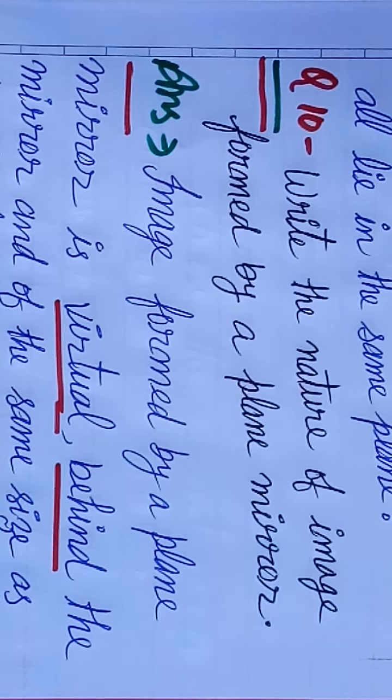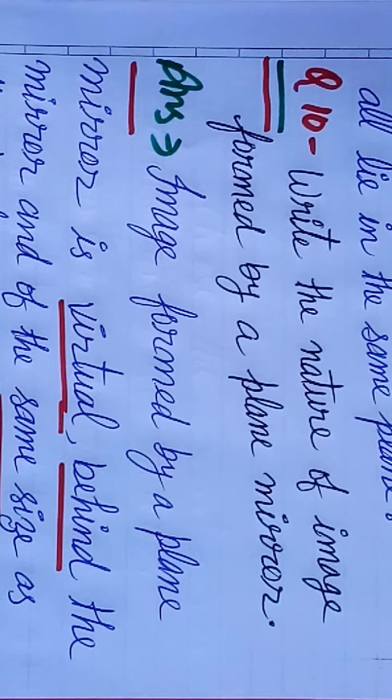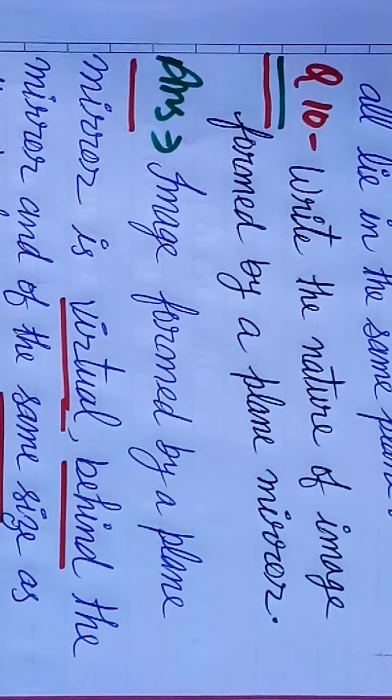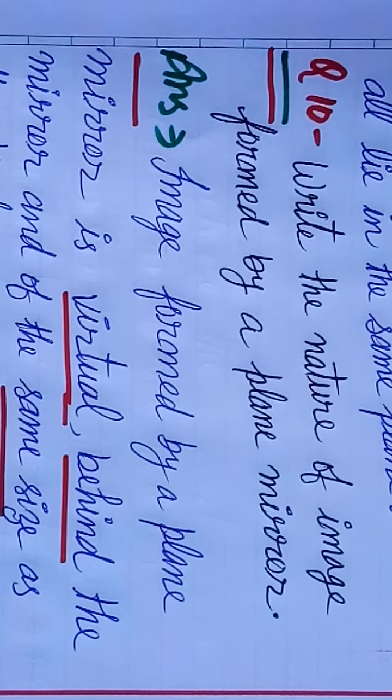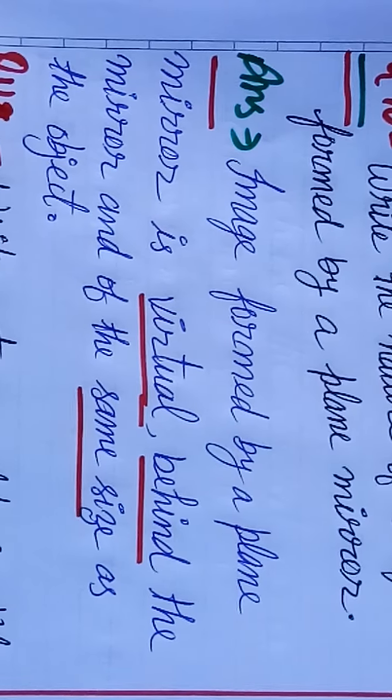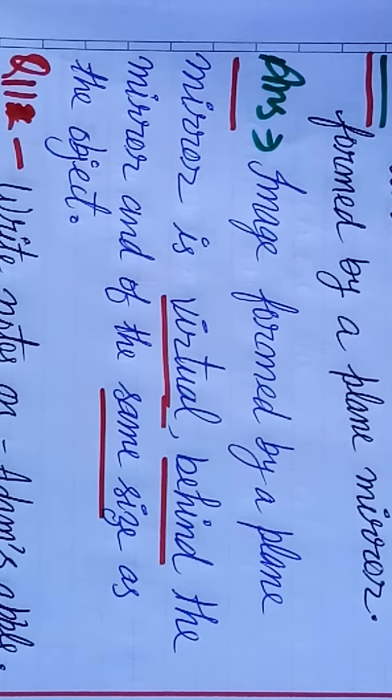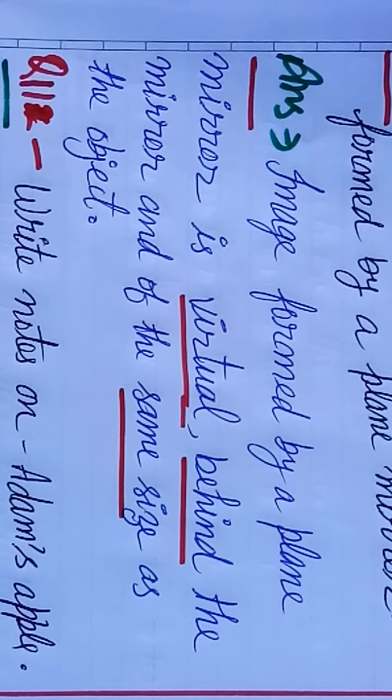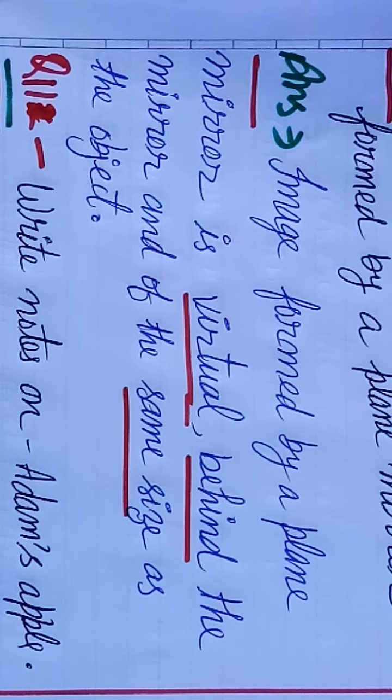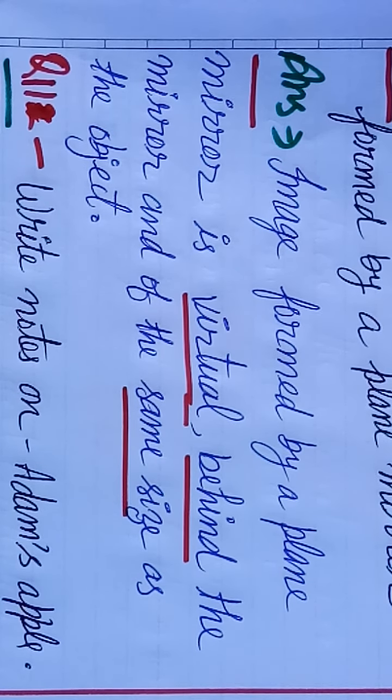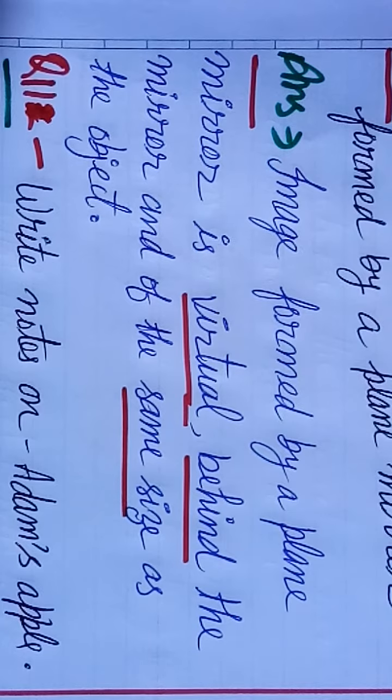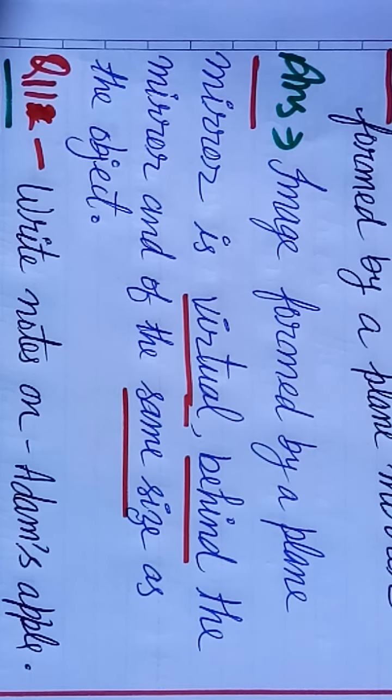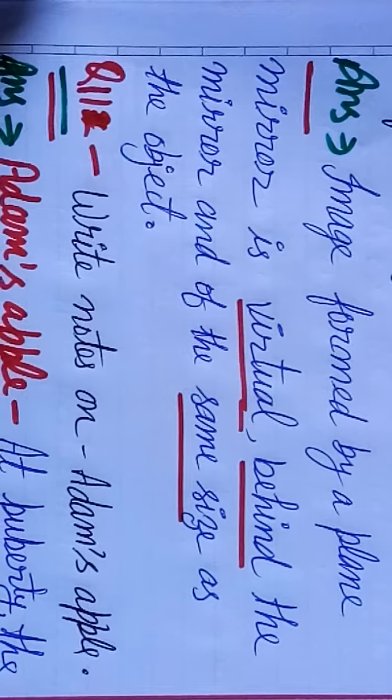Question ten. Write the nature of image formed by plane mirror. Plane mirror, the mirror we use to see our face. Image formed by plane mirror is virtual, behind the mirror, and of the same size as the object. Virtual means it cannot be taken on screen and it forms behind the mirror with the same size.